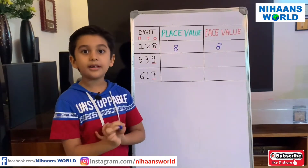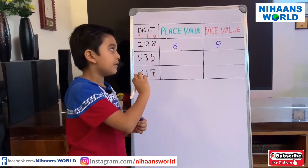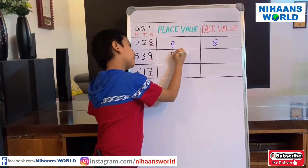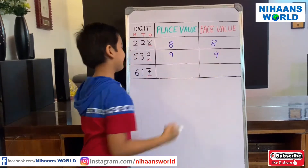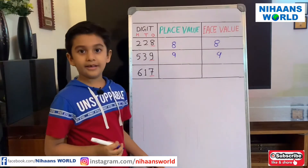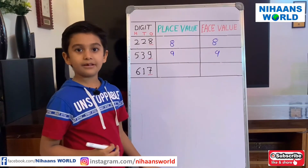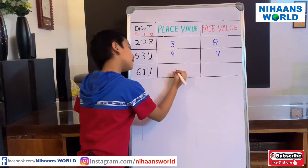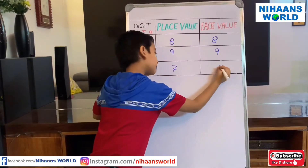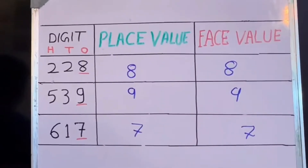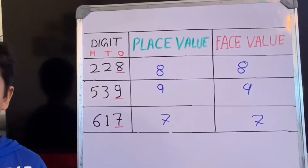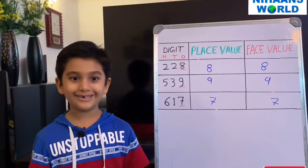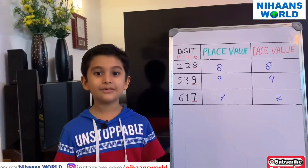In 539, 9 is both the place value and face value. Let us write 9 and 9. In 617, 7 is both the place value and face value. Let us write 7 and 7. If you see, the place value and face value for all these digits are the same. So the place value and face value of a digit in the ones place is always the same.